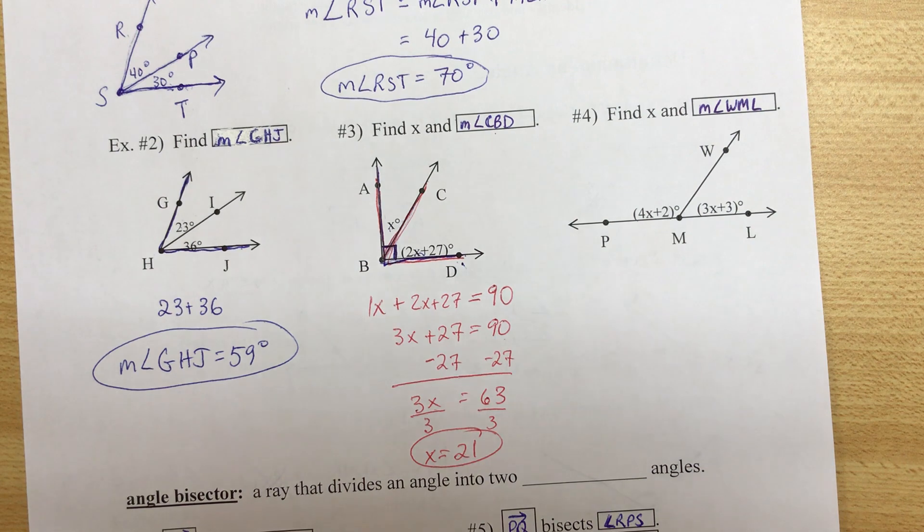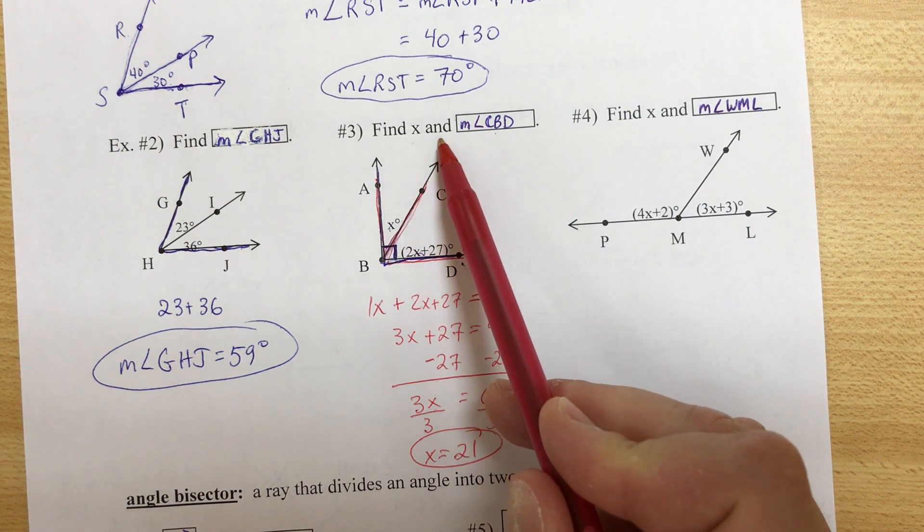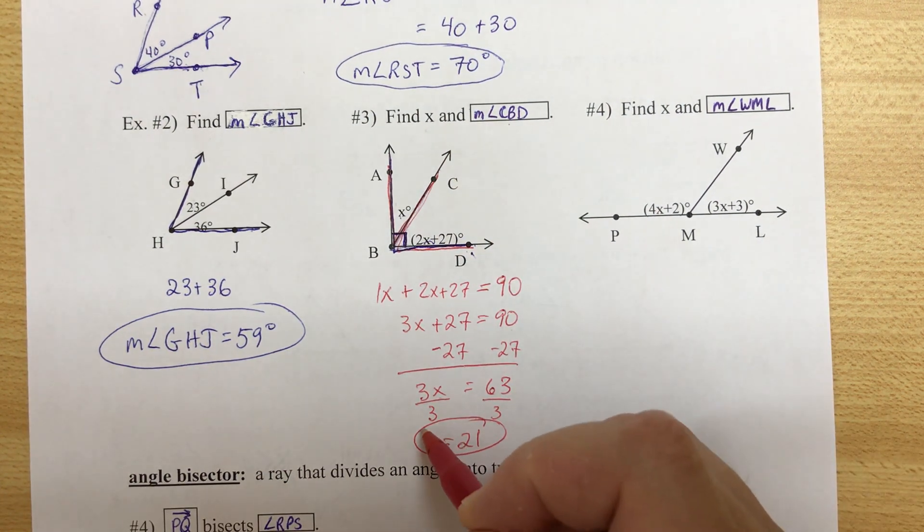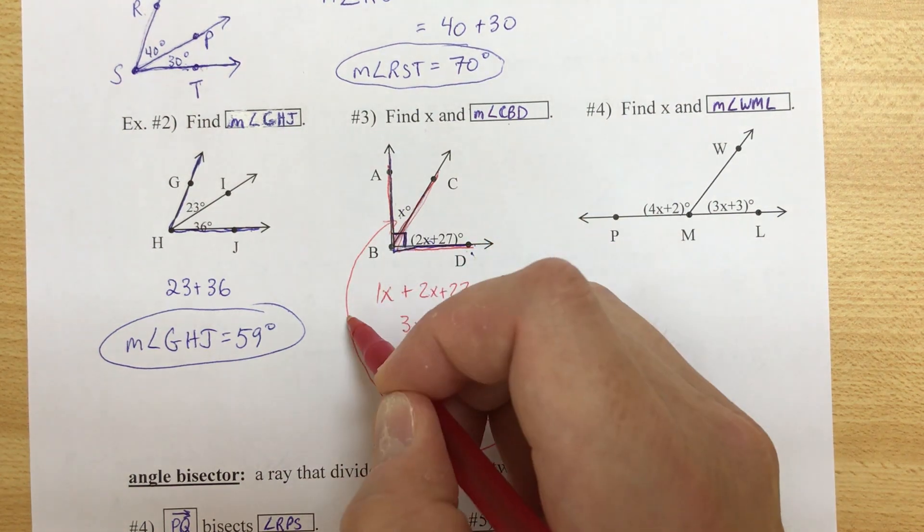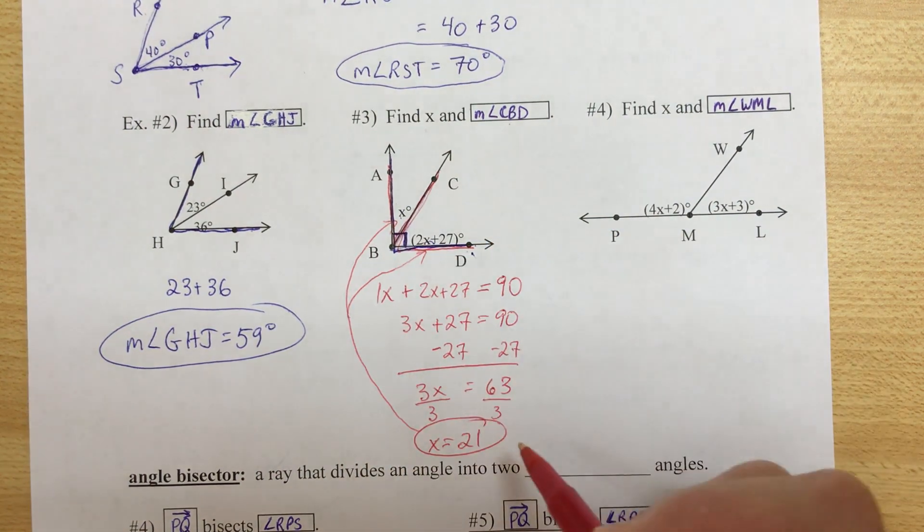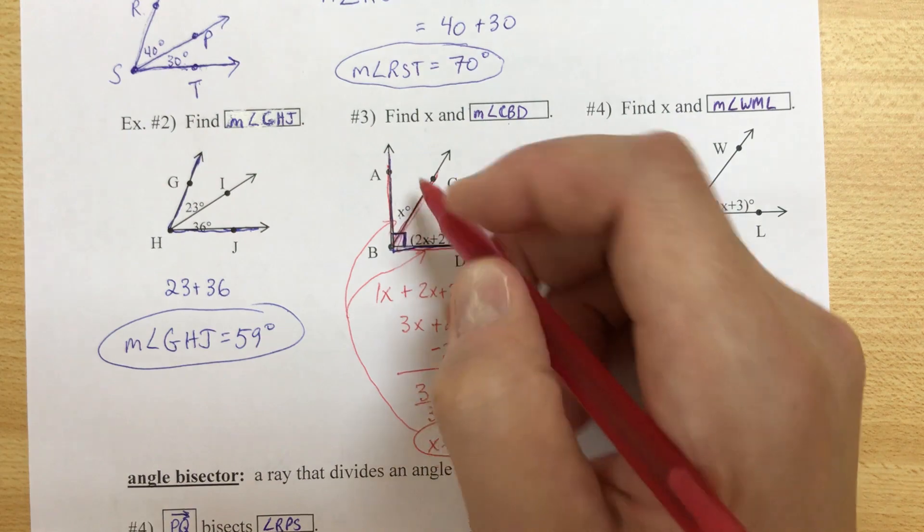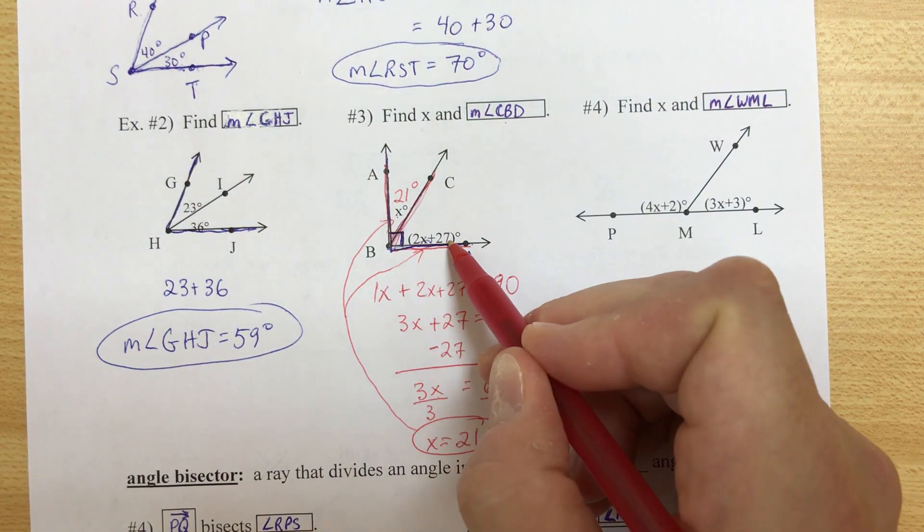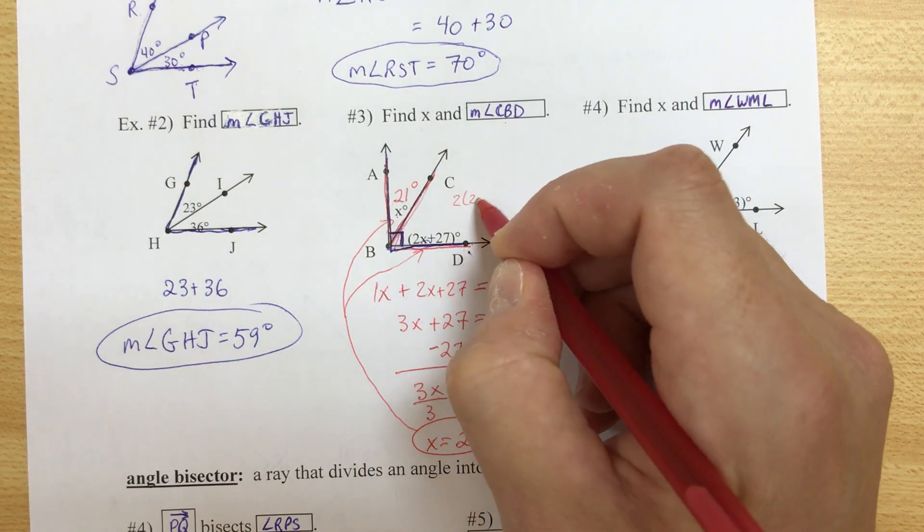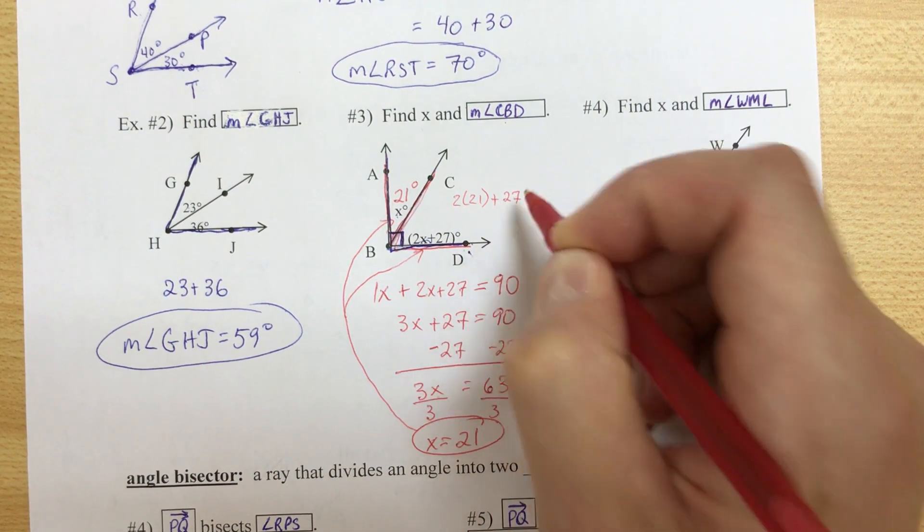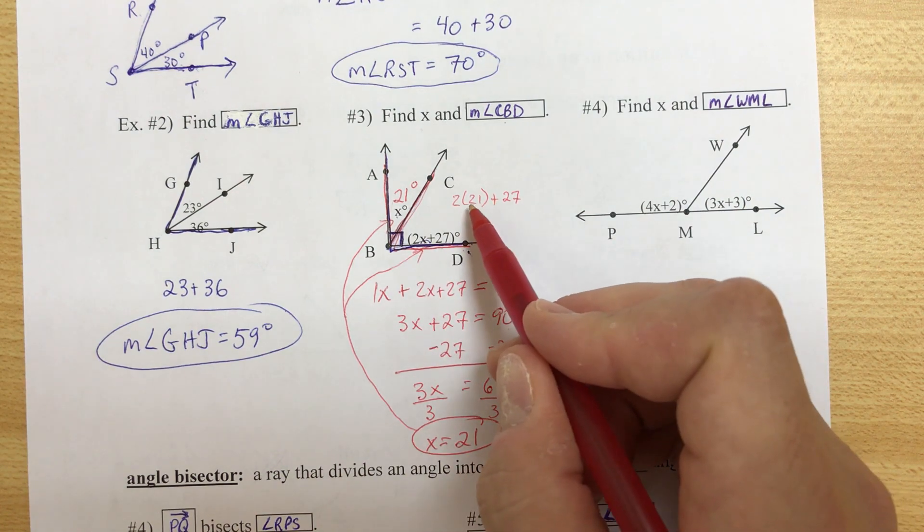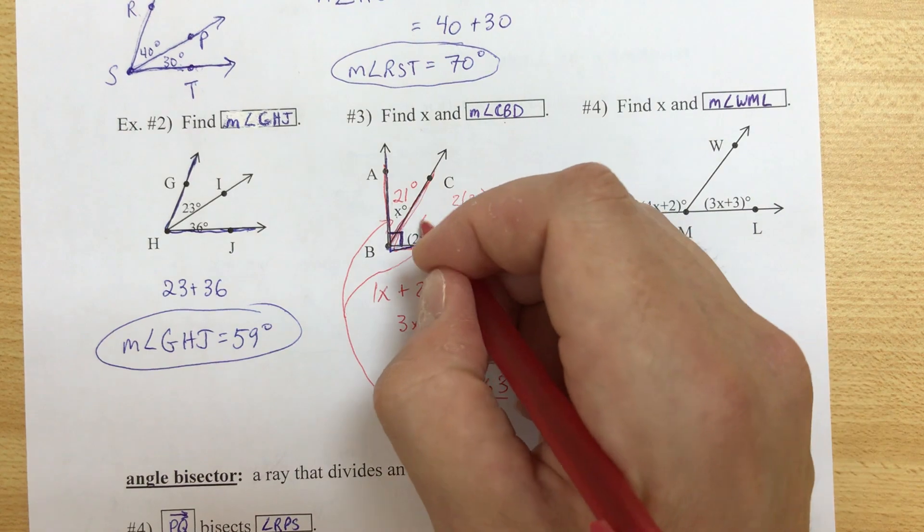Now we have x but we can't stop. We're not done. What did they ask for? Find x and measure of angle CBD. So we're going to take this. We're going to go back to the picture. I'm actually going to substitute this for both variables. So here is 21. Now this is 2 times x plus 27. So that's 2 times 21 plus 27. That's 42 plus 27, 69.